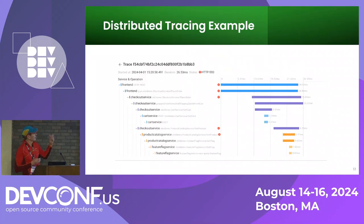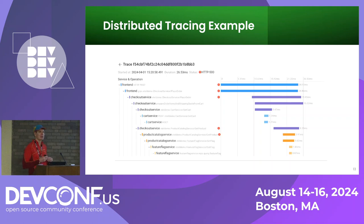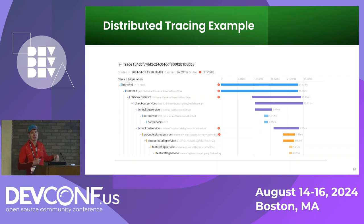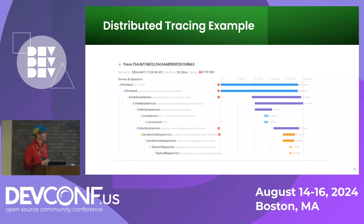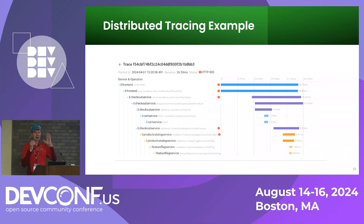Here is an example of how distributed tracing may look — this is from the OpenTelemetry demo — where we can see a request comes in, goes through different services, and in which servers we can see how long it took. If there are errors, we'd see them as well. We can also see what things are executed in parallel. So a lot of insight about performance optimization.